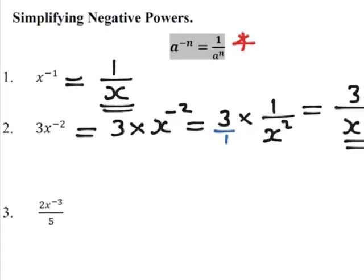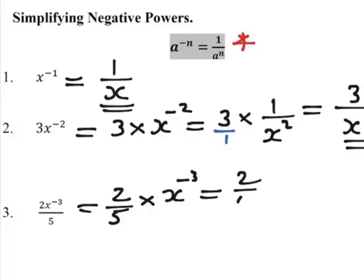The next one, we need to think of this as 2 fifths times x to the negative 3. If you like, think of it as x to the negative 3 over 1 to get the original answer. And then use the rule at the top for the x to the negative 3, n is 3, so it's 1 over x cubed.